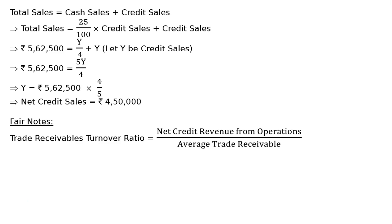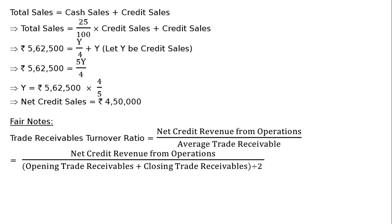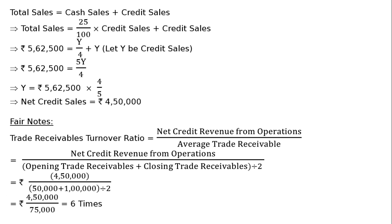Trade receivables turnover ratio equals net credit revenue from operations divided by average trade receivables, that is net credit revenue from operations divided by opening trade receivables plus closing trade receivables whole divided by 2. That is Rs. 4 lakh 50,000 upon Rs. 90,000 plus Rs. 60,000 divided by 2, which equals 6 times. This is the final answer.